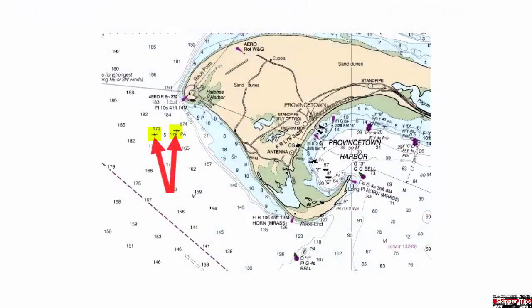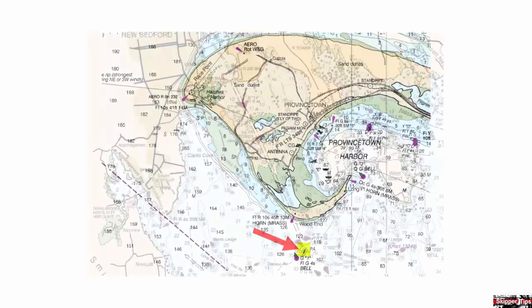Fishbone symbols on a nautical or electronic chart designate wrecks beneath the water. Those without dots are placed on the chart by cartographers to warn commercial fishermen not to drag nets in this area. A fishbone symbol surrounded by dots will be dangerous to all surface navigation.